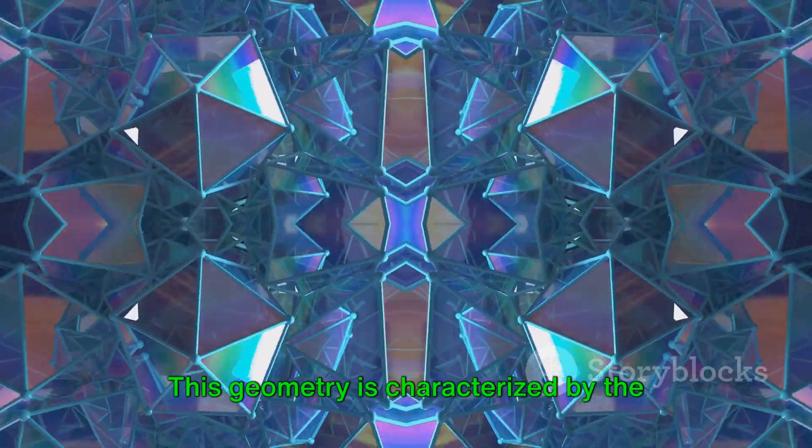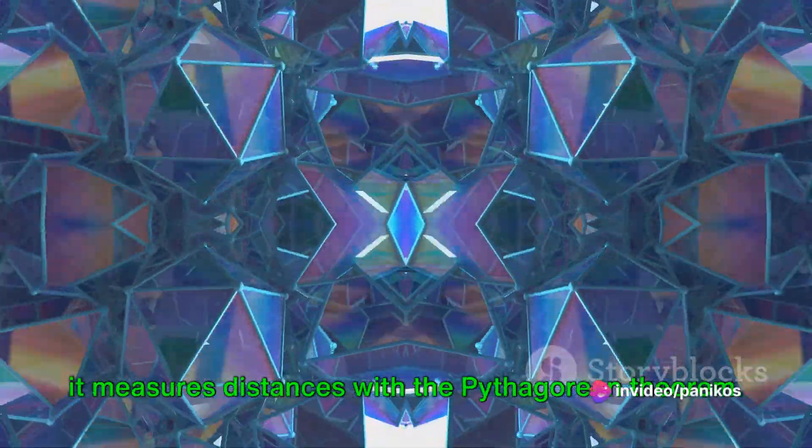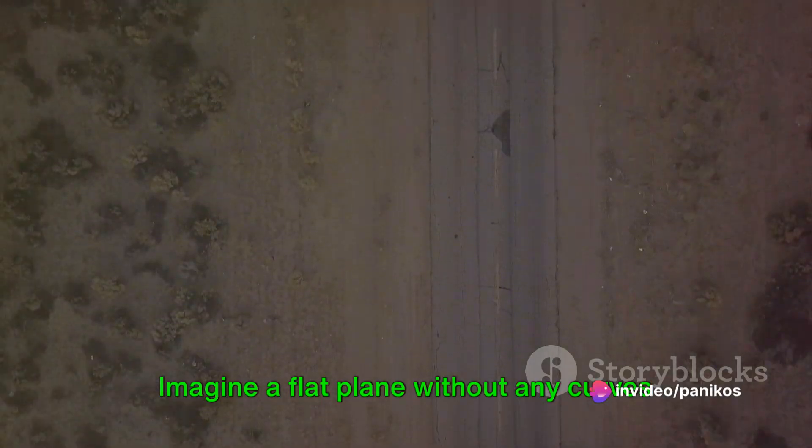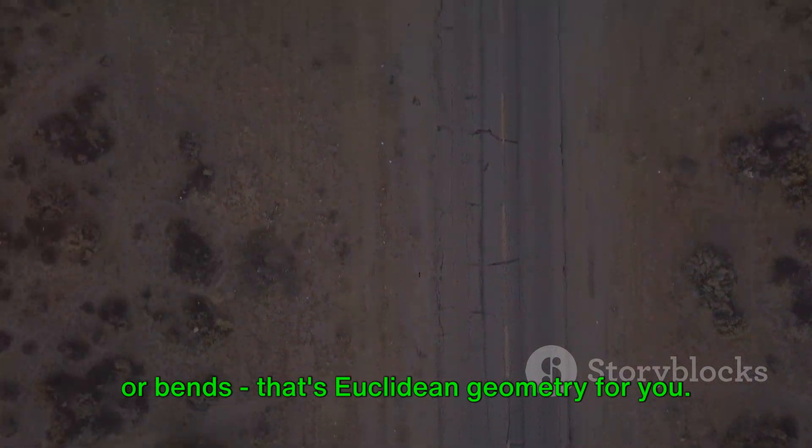This geometry is characterized by the symmetry of rotations and reflections, and it measures distances with the Pythagorean theorem. Imagine a flat plane without any curves or bends. That's Euclidean geometry for you.